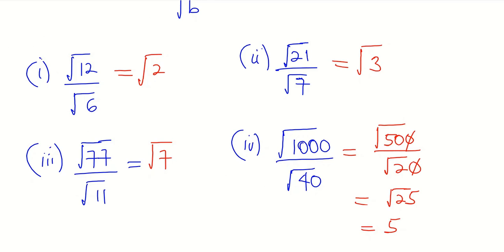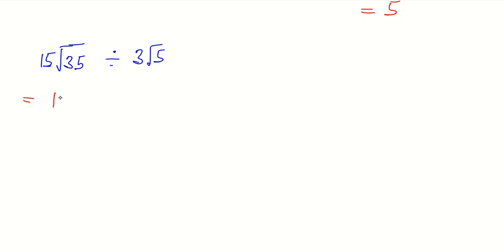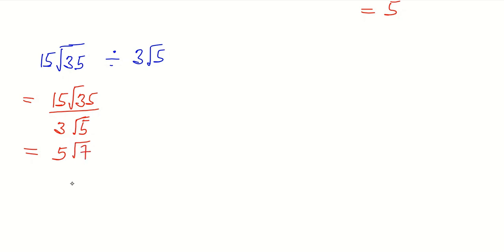The next example: 15 square root of 35 divided by 3 square root of 5. We rewrite this as 15 square root of 35 divided by 3 square root of 5. Then 3 goes into itself once and into 15 five times, giving us 5. For the radical part, 5 goes into itself once and into 35 seven times, so our answer becomes 5 square root of 7.